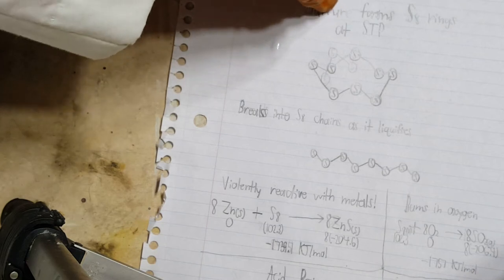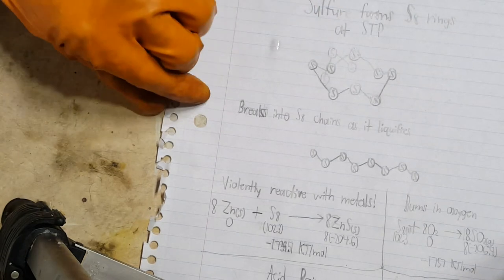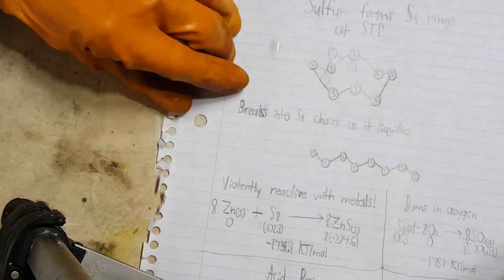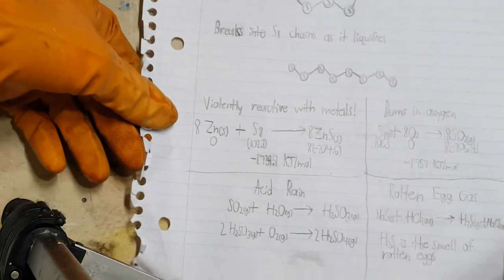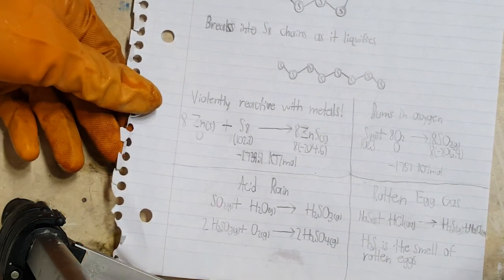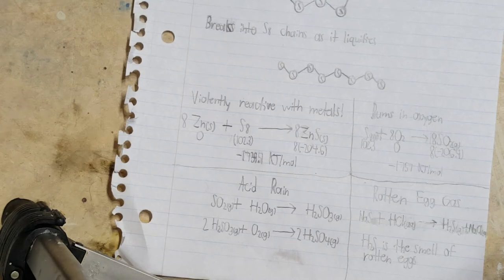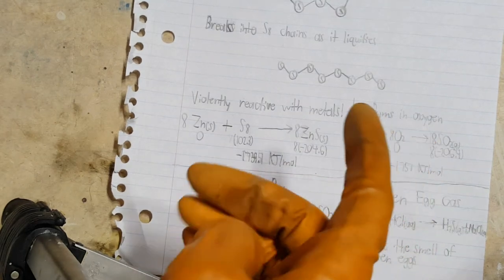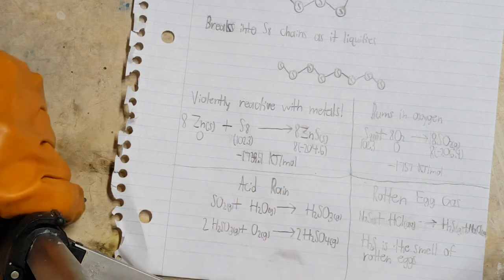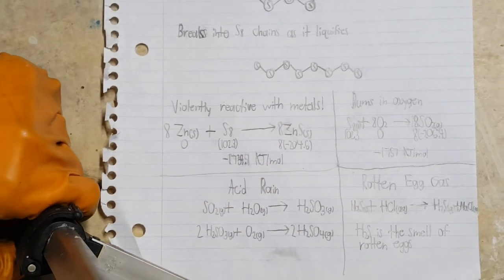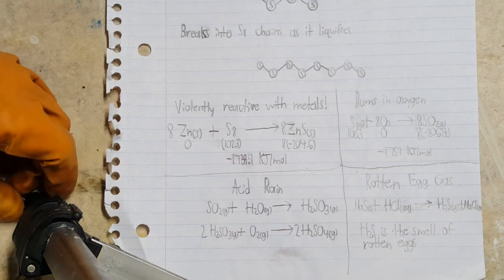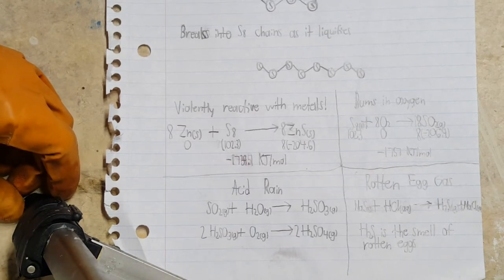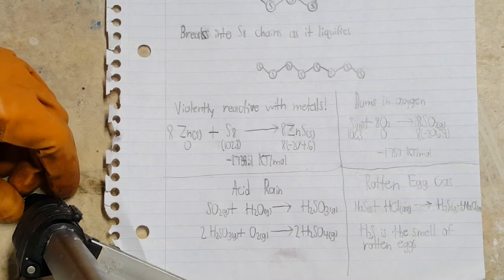Sulfur is violently reactive with metals, especially if the metal is powdered. For example, sulfur reacts with zinc to create zinc sulfide. In the atmosphere, sulfur burns to produce sulfur dioxide — and I hate sulfur dioxide. It burns your respiratory tract, it smells, it's colorless, it's nasty stuff.